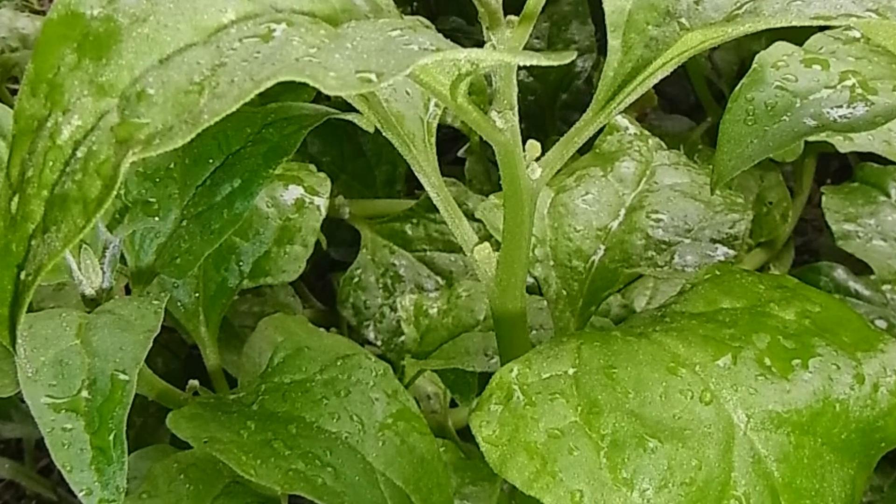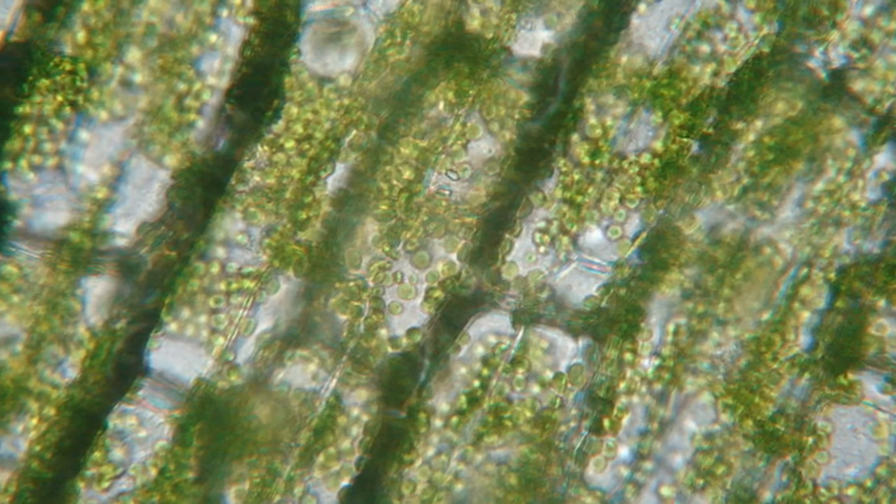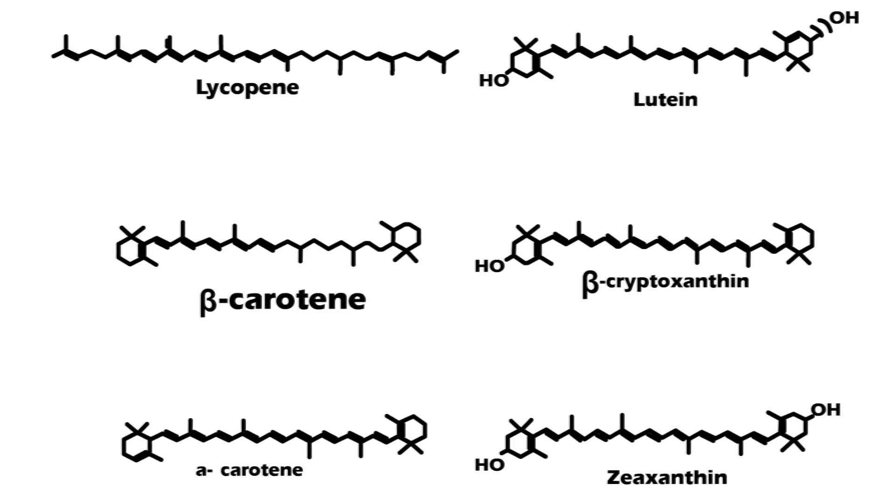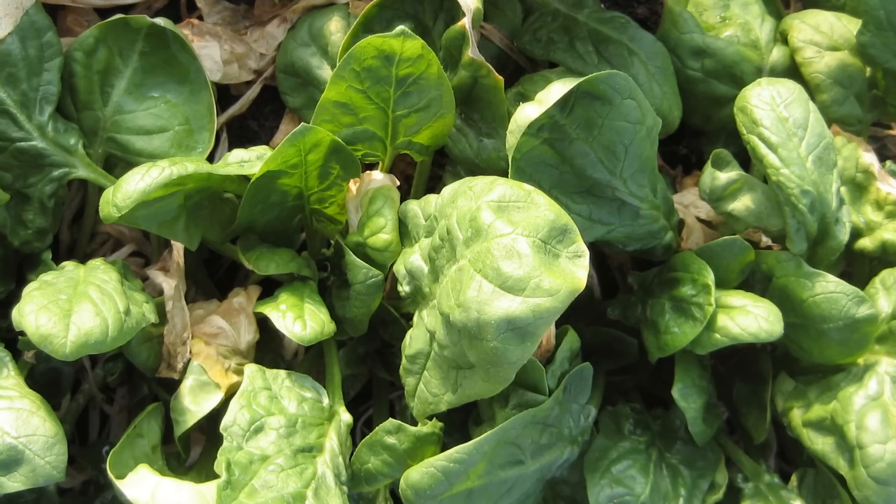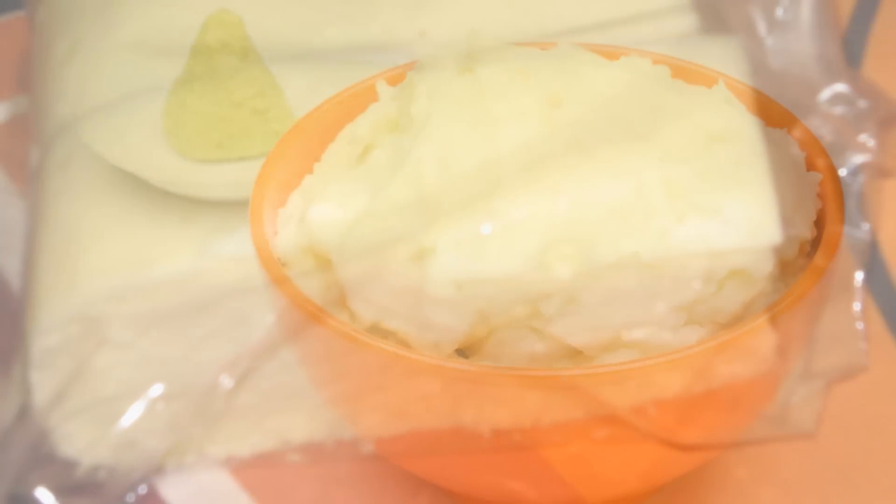The green leafy vegetable spinach is a rich source of these pigments. The chlorophylls present in spinach are chlorophylls A and B. Carotenoids, the yellow pigments found in spinach, are also involved in photosynthesis. Beta-carotene is the compound that gives butter and margarine their characteristic yellow color.